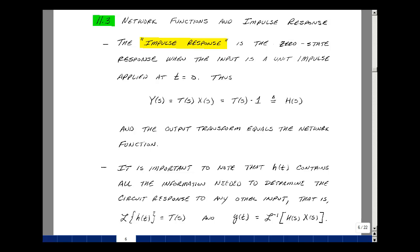This lesson deals with network functions and the impulse response. You can find these notes in the ECE 202 ebook in Chapter 11, starting on page 6. The impulse response is the zero-state response when the input is a unit impulse applied at t equals 0. In general, y(s) equals T(s) times x(s), but if x(s) equals 1, then y(s) equals T(s), which we define as h(s), called the impulse response. Our output transform equals our network function.